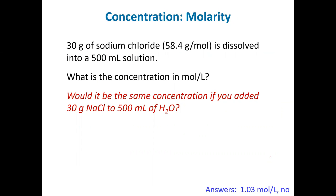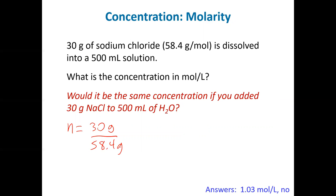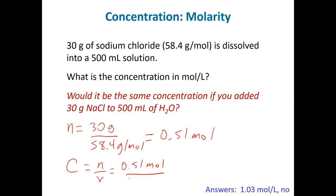Here's the first one. We have 30 grams of sodium chloride dissolved into a 500 mL solution. This should be pretty standard first-year chemistry. First thing we need to do is figure out the number of moles, represented by n. We take the mass — 30 grams — and divide by the molecular weight, which is 58.4 grams per mole. The number of moles is 0.51 moles. The concentration — big C — is the number of moles divided by the volume: 0.51 moles divided by 0.5 liters.